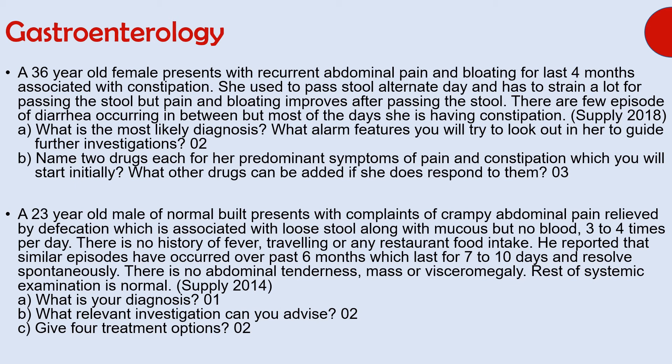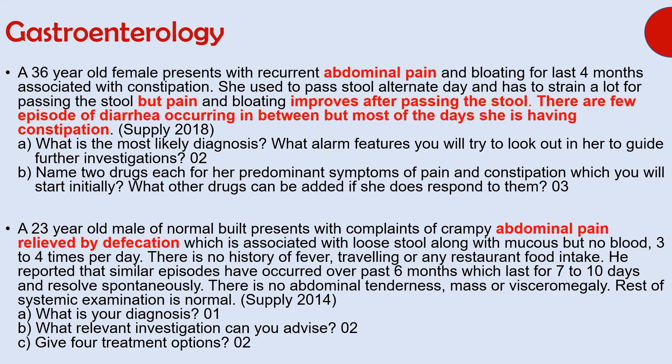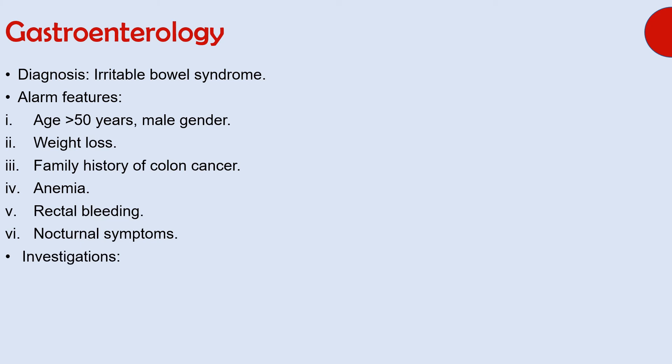The diagnosis is irritable bowel syndrome. Some important points that can lead you towards this diagnosis are abdominal pain that improves after passing stool and alternating bowel habits — diarrhea alternating with constipation. Alarm features include age more than 50 years, male gender, weight loss, family history of colon cancer, anemia, rectal bleeding, and presence of nocturnal symptoms. Investigations include complete blood count, fecal calprotectin, and sigmoidoscopy.